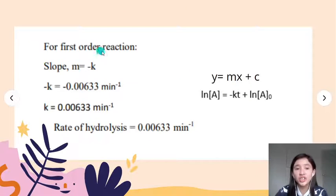For the first order reaction, m equals negative k. Why? Because if we compare the two equations above, y is ln(A), which is ln(V∞ - Vt), equals -kt plus ln(A0). Ln(A0) is c, the y-intercept. Time is the x-axis, so automatically the gradient is the rate constant. We can substitute inside.